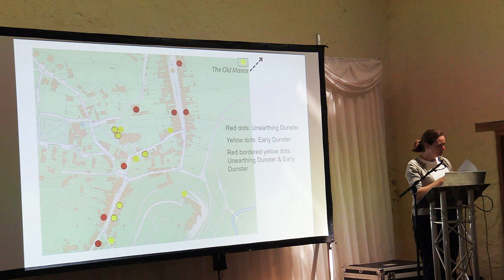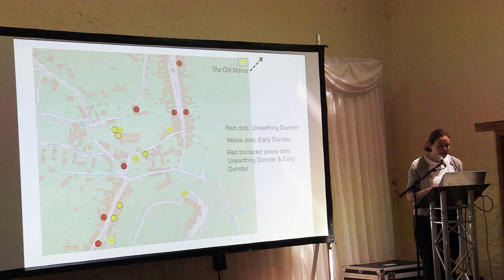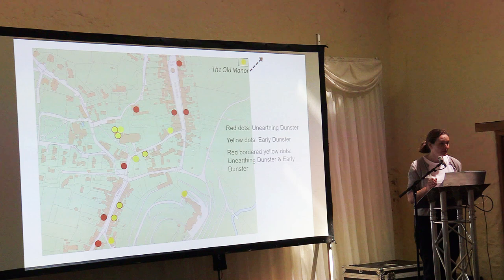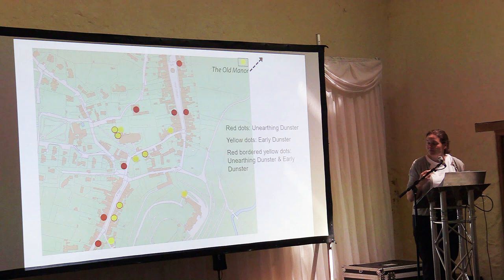Moving on to look at Dunster: this diagram shows the buildings that have been subject to dendroanalysis in Dunster. 17 of these 18 buildings have had one or more timbers dated by dendro, the exception being the Stag's Head on West Street, which has only had one timber sampled and unsurprisingly couldn't be securely dated. With dated timbers mostly from roofs, it appears that the dendro programme has been very successful — however, all is not necessarily quite as it seems.